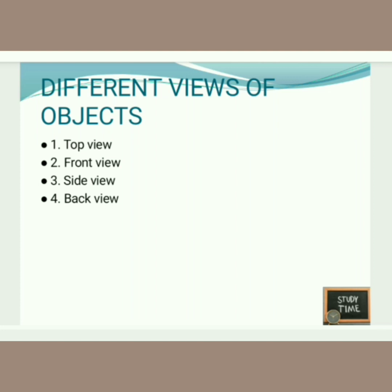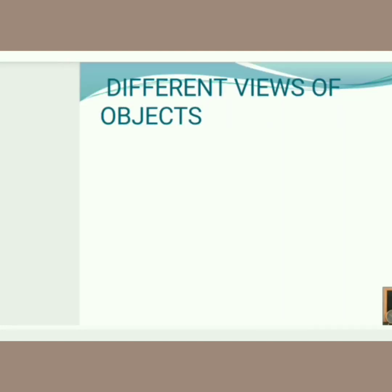First, what is an object? An object is a material thing which we sense or see. Whatever we see or touch is called an object. There are four different views of an object: top view, front view, side view, and back view.